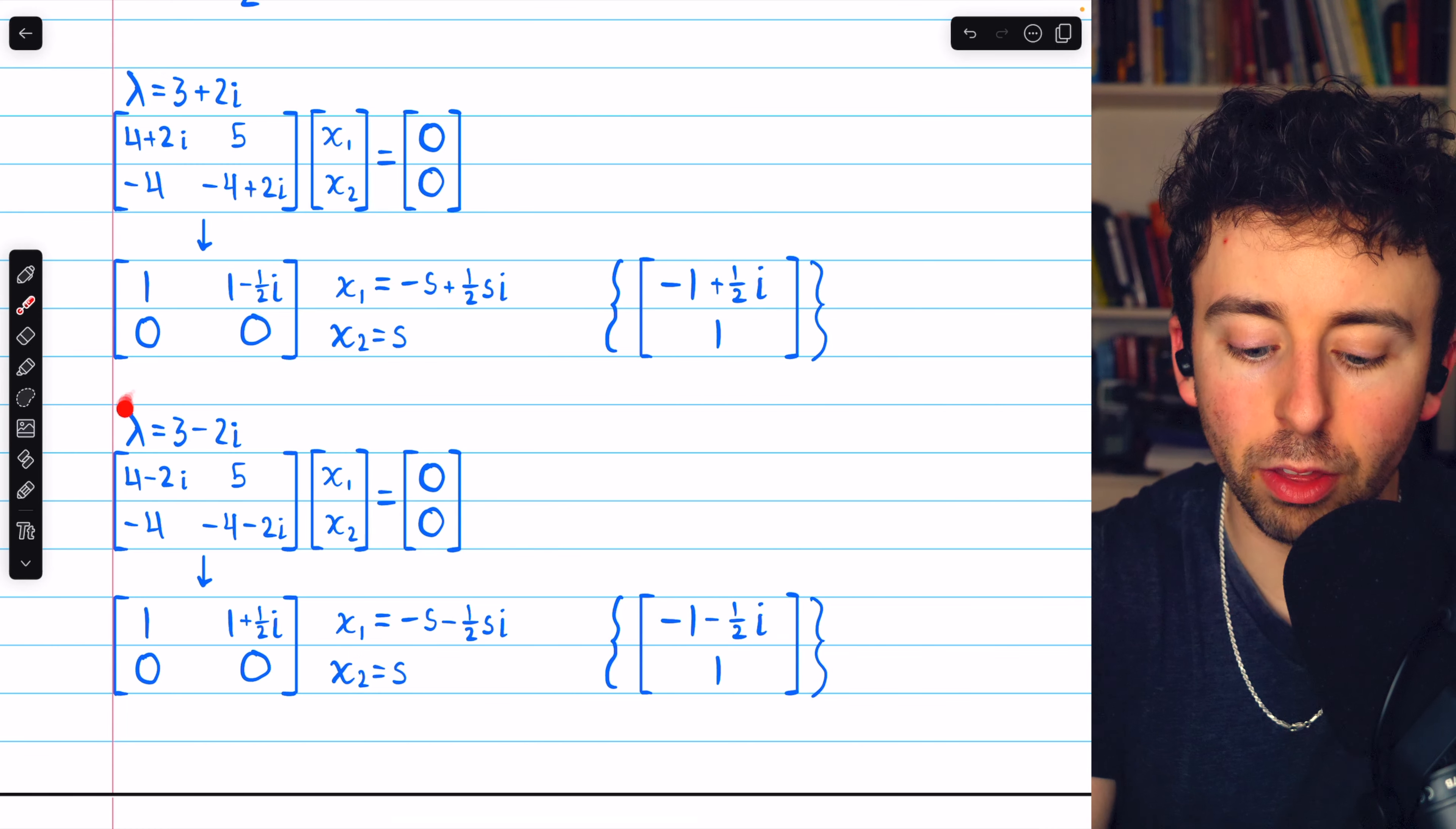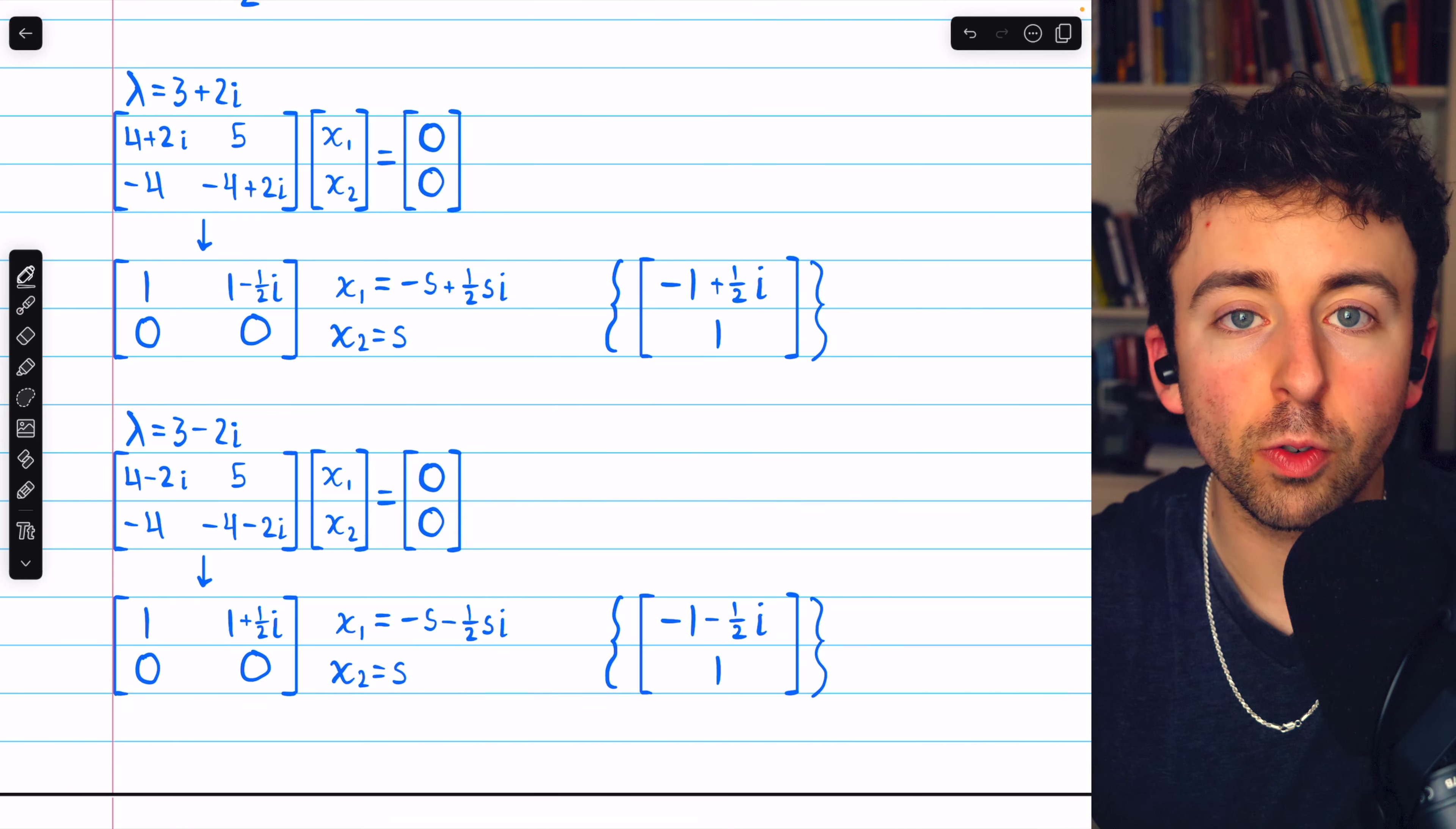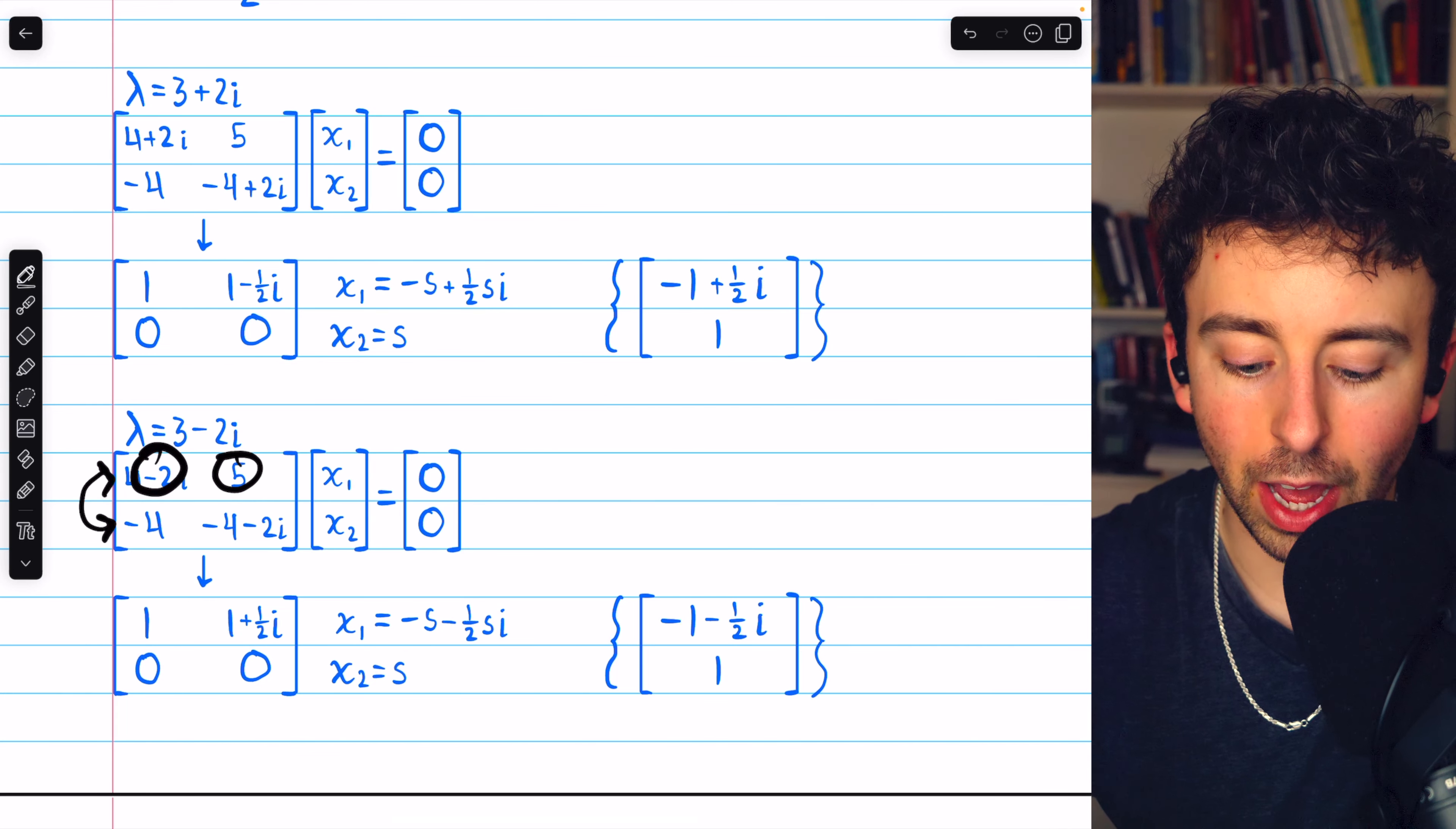So, the other eigenvalue is just the conjugate, 3 minus 2i. This is the matrix we get, and we can do the same thing as before. We know that there have to be non-trivial solutions. So, we could zero out the first row, and then swap rows 1 and 2, and then divide by negative 4.